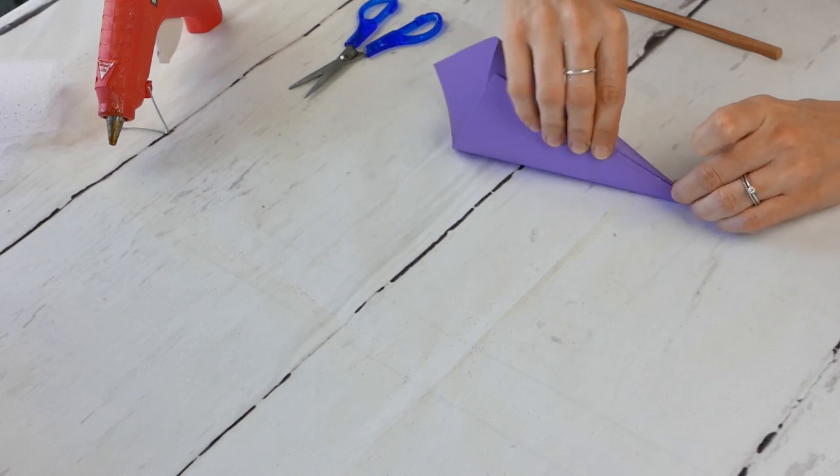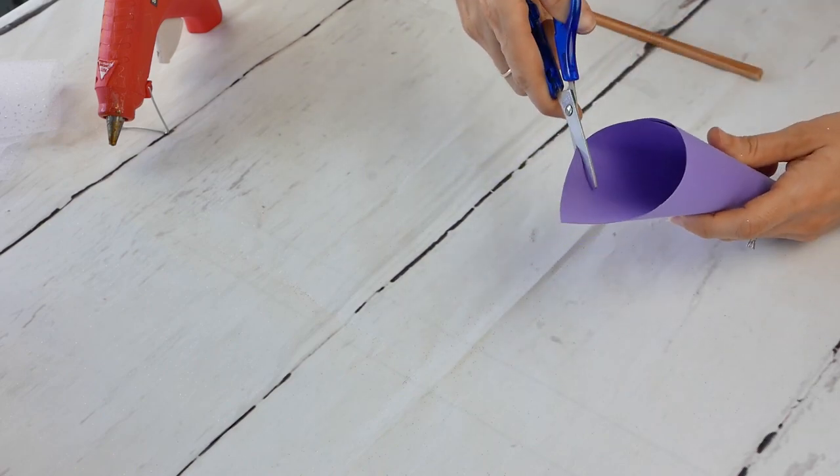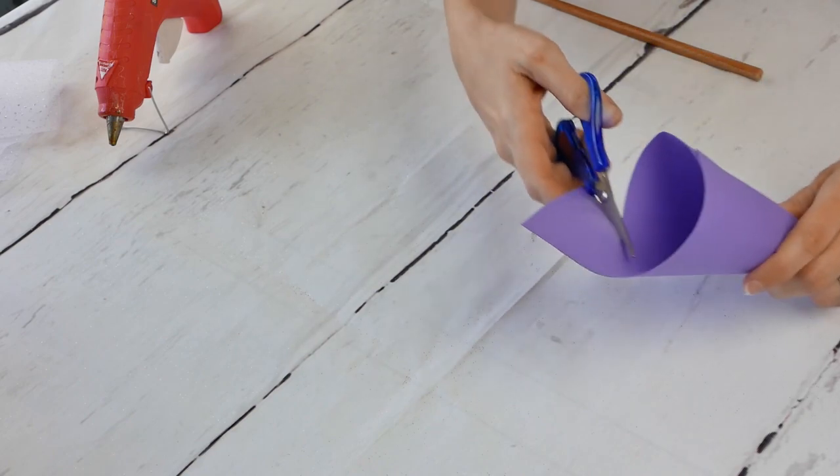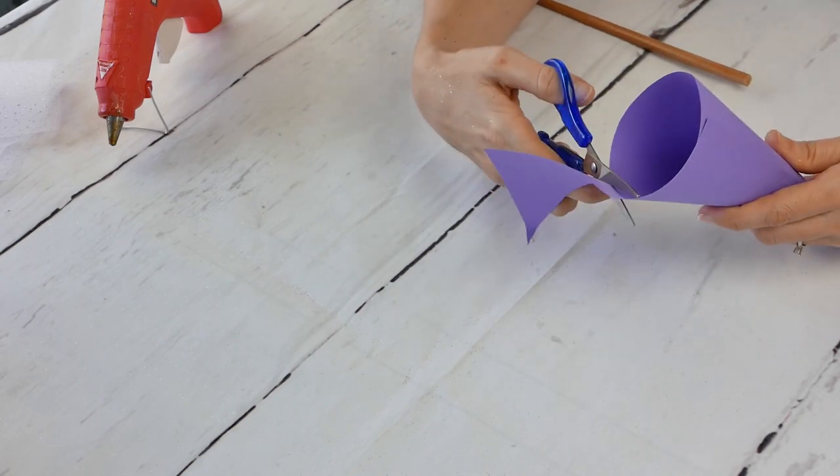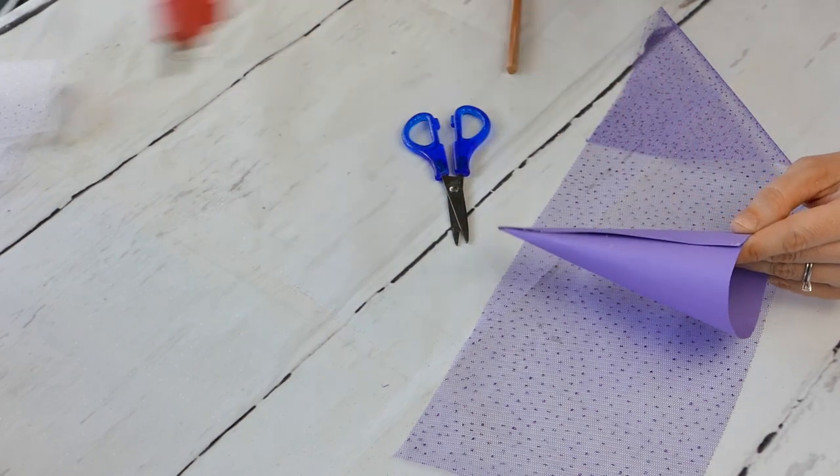But once you have that glue together, then you can cut it to any size. Our hat here is a little tall, but you can definitely just trim it to any size that you want. Once that hat is put together, then you're just going to put that tulle, that really cute glittery tulle.